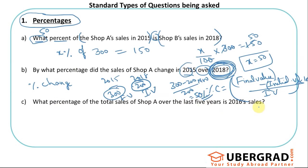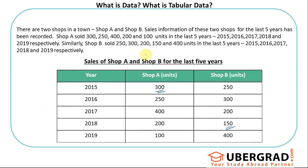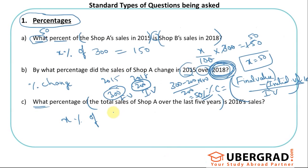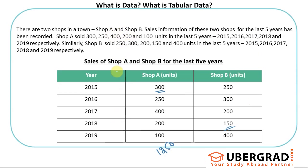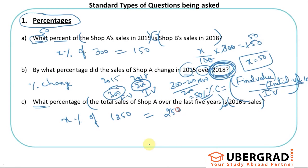Next: 'What percentage of the total sales of Shop A over the last five years is the 2016 sales?' This is similar to the first question. Take x as the answer. The total sales of Shop A over five years: 300 + 250 = 550, + 400 = 950, + 150 = 1100... totaling 1250. So x/100 × 1250 = 250 (the 2016 sales for Shop A).